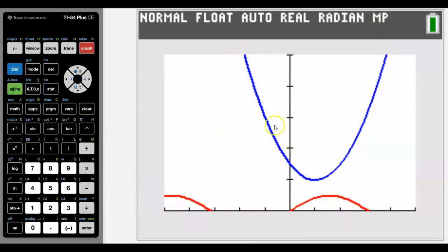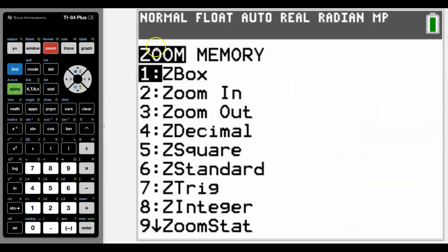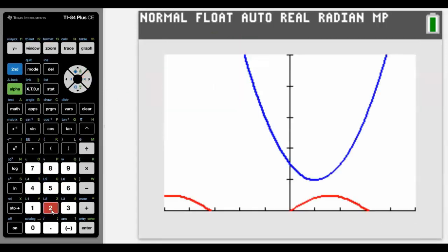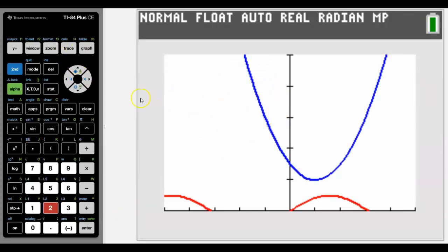I will just show you a little nice feature though of this because we've got this window setting already done. And what we can do is go to Zoom, go across to Mem at the top here, or memory, and we can store that window setting that we currently use. Don't forget, that was negative five to five and zero to ten. And we can store that window setting.